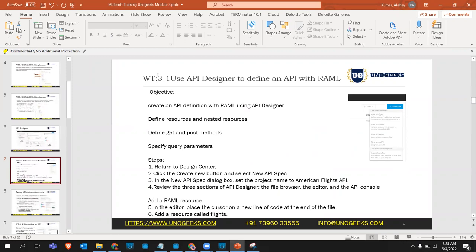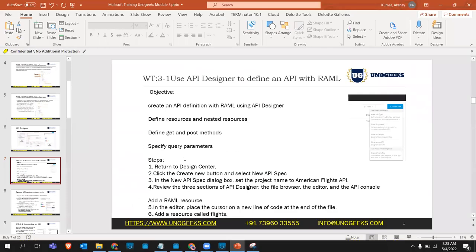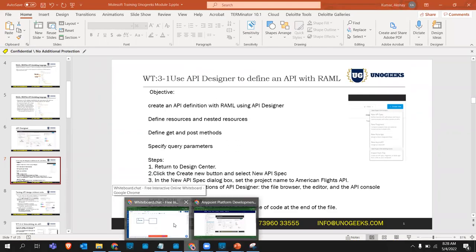Let's go to our first hands-on walkthrough. We will use API Designer to define an API with RAML. Our objective is to create an API definition with RAML using API Designer, define resources and nested resources, define GET and POST methods, and add a query parameter. Let's do that in AnyPoint Design Center.